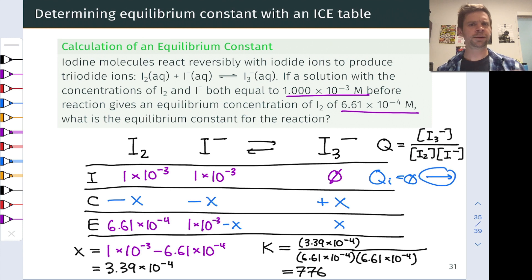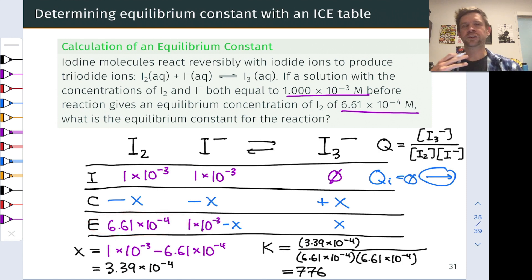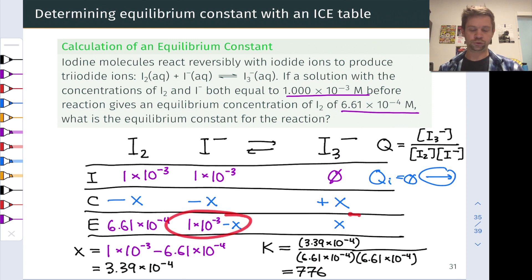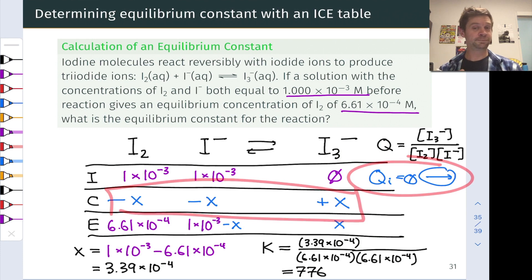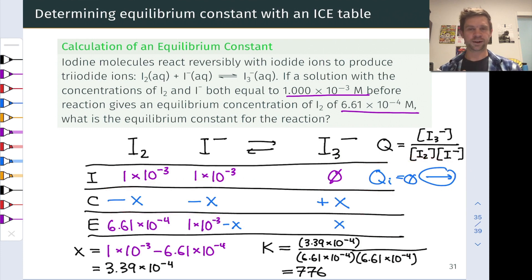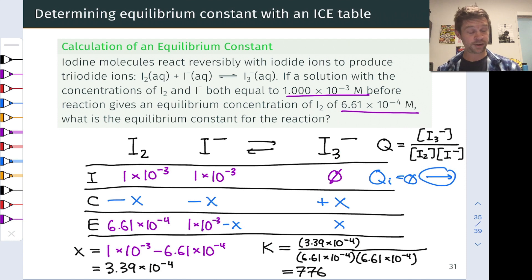This shows a bit of a twist on the typical ICE problem of finding equilibrium concentrations. We knew one equilibrium concentration but used the ICE table as an organizational tool to work through the algebra of determining the other two missing equilibrium concentrations, and ultimately the equilibrium constant. The other thing to point out is the importance of comparing Q to K to write the change line — don't skip that step. It's tempting to do so, but it can lead you astray. Writing the reaction quotient and the corresponding equilibrium equation was critical for ultimately getting the value of K.